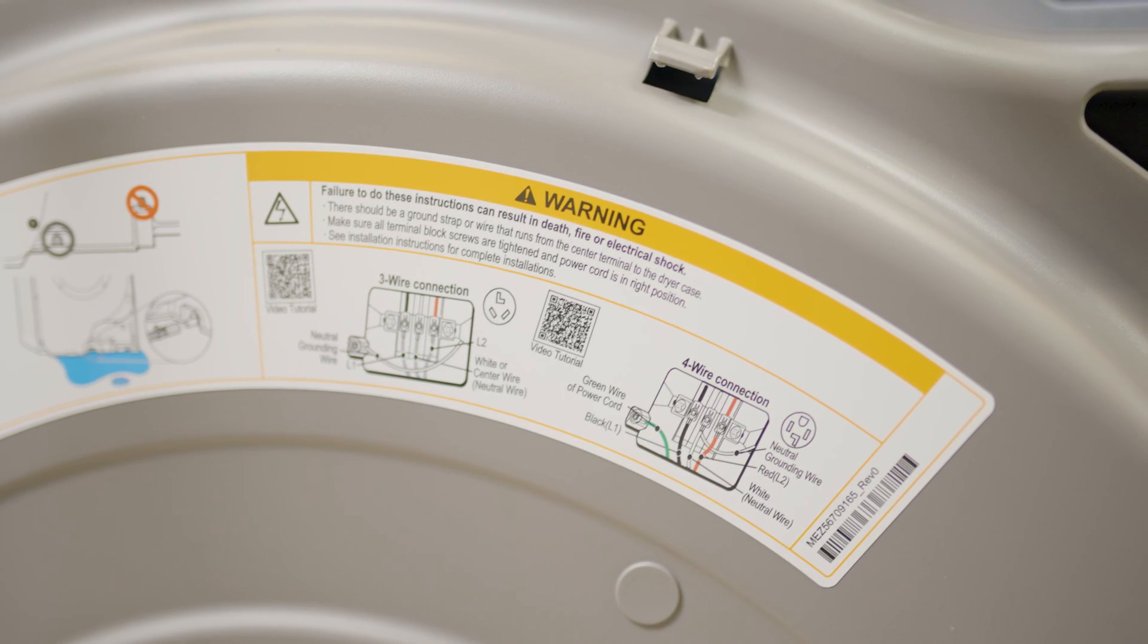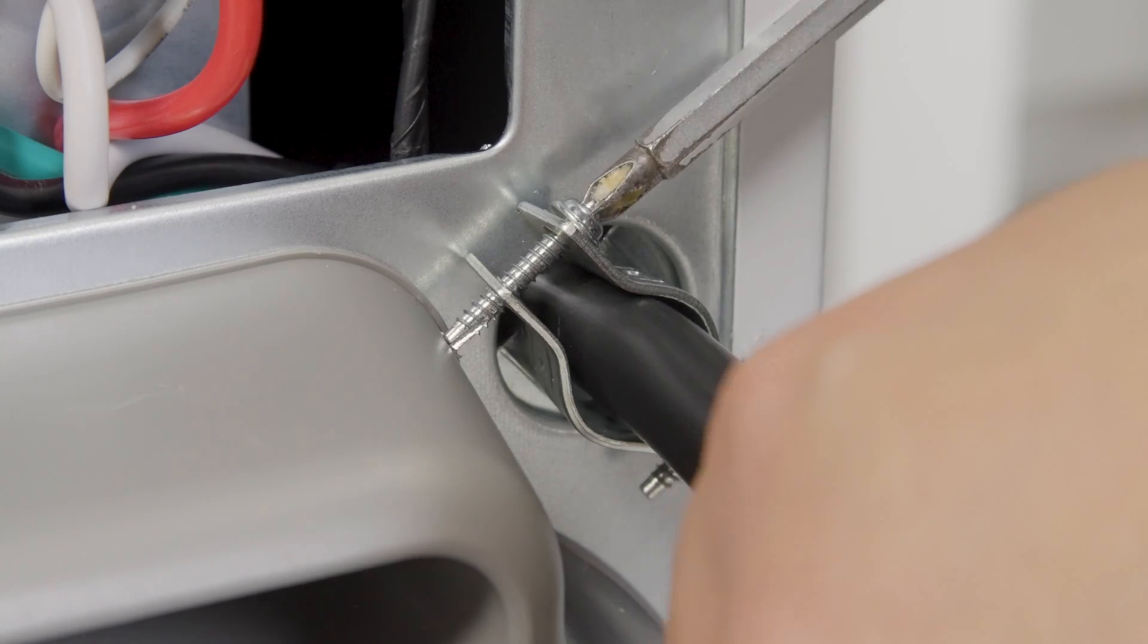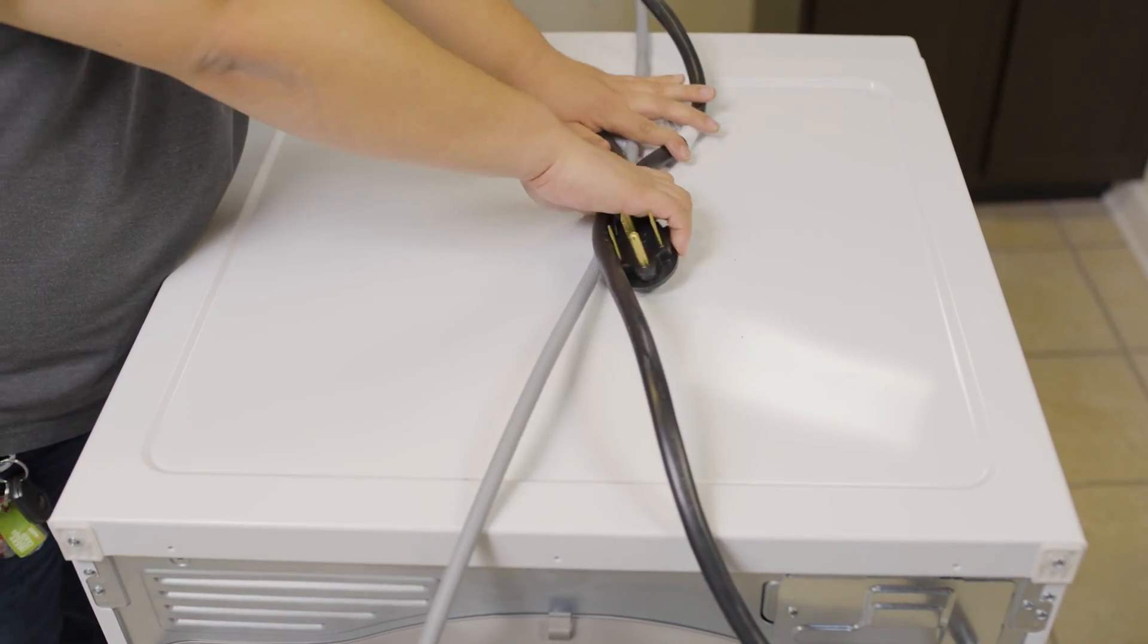If you want to double check your wiring, the dryer has a label on the back with a diagram for a three or four wire installation. Tighten the strain relief so the cord is secure and reinstall the access cover.